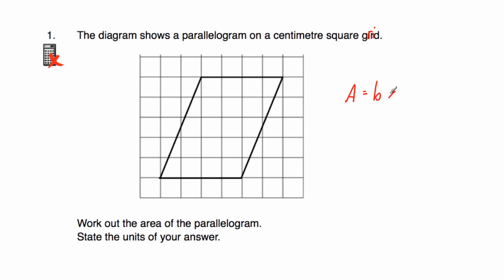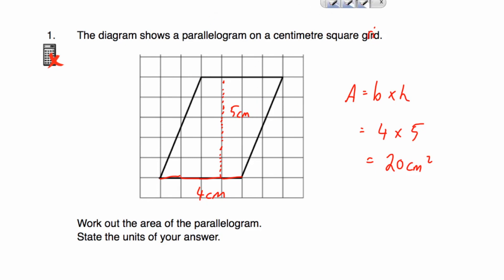The area of a parallelogram equals the base multiplied by the perpendicular height. Looking at this parallelogram, the base is four centimeters and the height — going from the base up to the top — is five centimeters. So we do four multiplied by five, which gives us 20 centimeters squared. Alternatively, you could chop this part off and place it on the other end to form a rectangle: four by five is still 20. I like using the formula because it's quite straightforward — base times height.